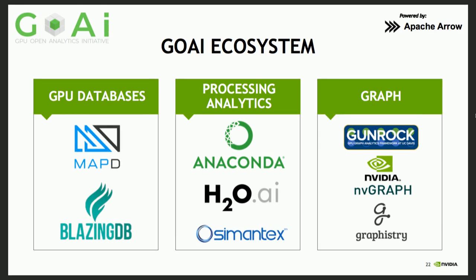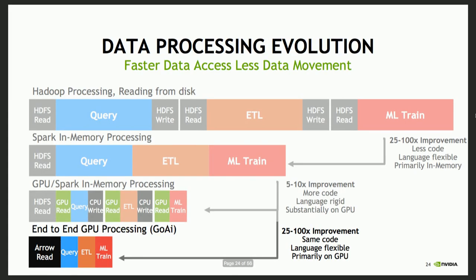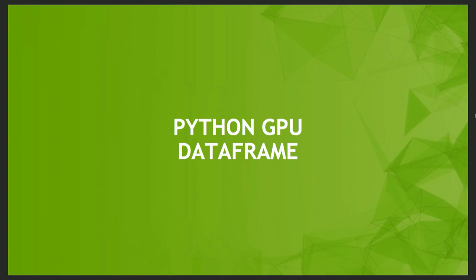The GOA ecosystem formed so we can really allow this kind of end-to-end GPU computing. One of the big things we want people to take away is that Arrow on system memory is the same Arrow on GPU memory, even though we just call it a GDF. This allows us not only interoperability between GPU and CPU, but the ability to move data back and forth without paying a heavy conversion penalty. With that, I'm going to turn it over to Keith to talk more about the Python GPU DataFrame.